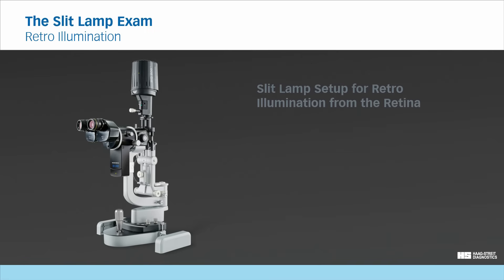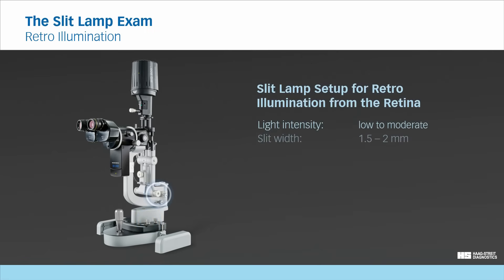When the retina is used for retroillumination, choose a low to moderate light intensity and a slit width of about 2 mm. Set the illumination angle between 0 and 10 degrees. Choose a magnification of 10 times and zoom in if required.